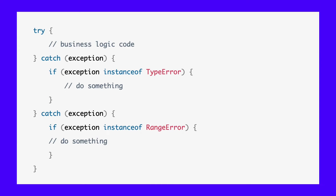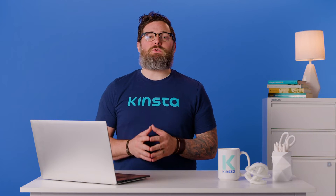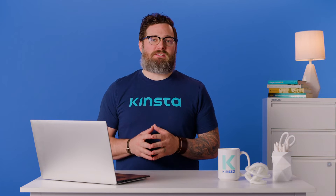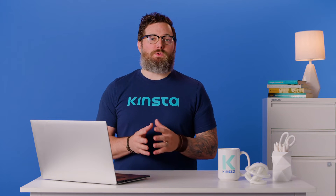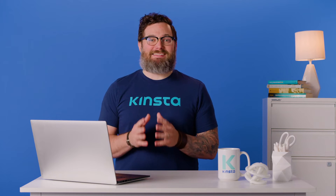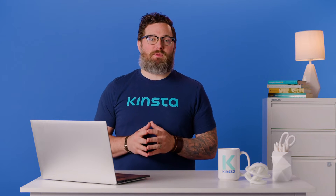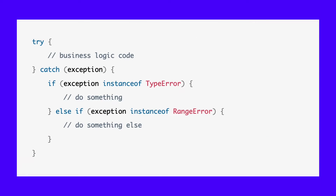The catch block is responsible for handling the errors that the trailing try block catches. Here is its syntax. Unlike C++ or Java, you can't append multiple catch blocks to a try block in JavaScript. Instead, you can use an if-else statement or a switch-case statement inside the single catch block to handle all possible error cases. It would look like this.